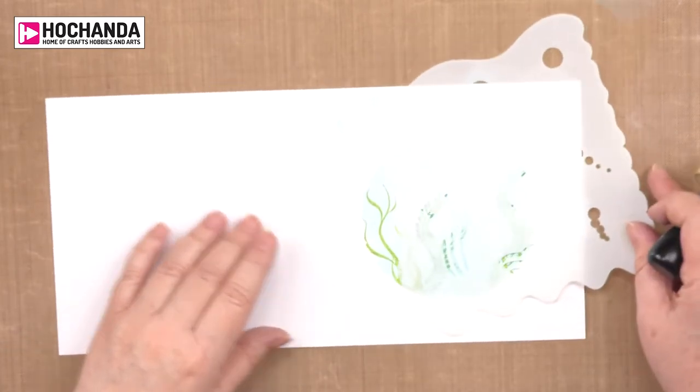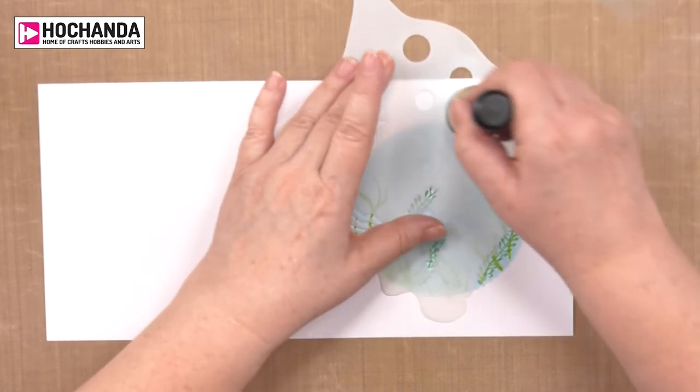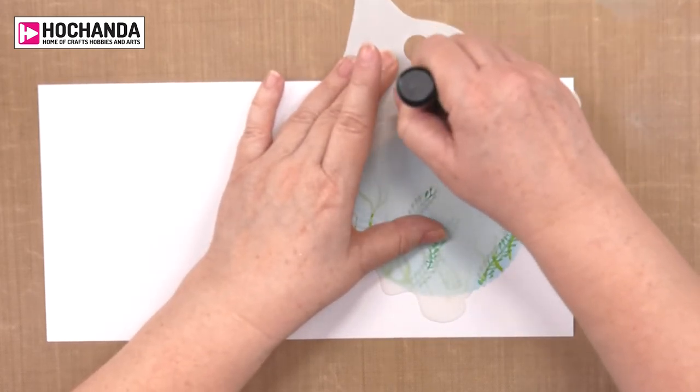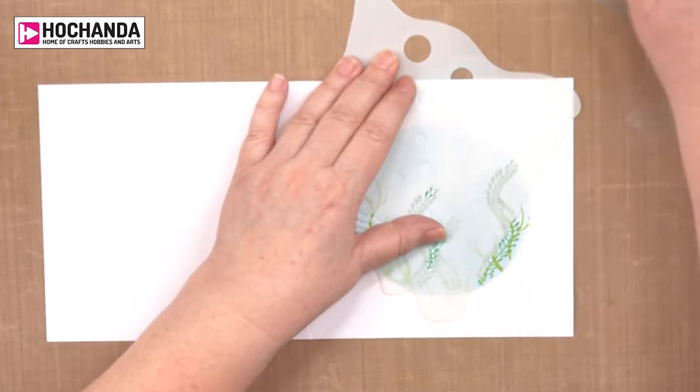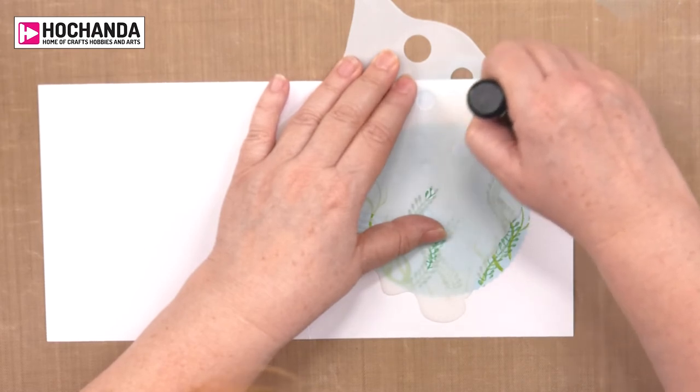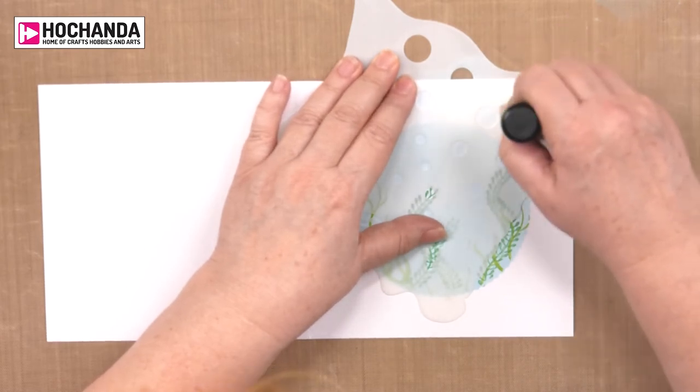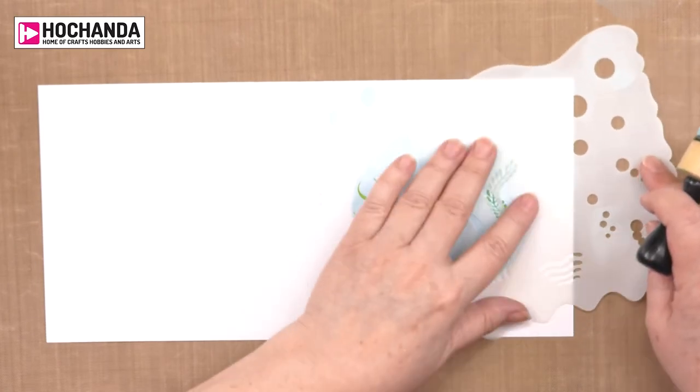Now we can do some more over here. I think I should make one of these in green. Some nice sea green colors. We need some more over here.